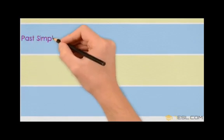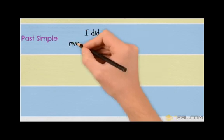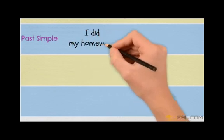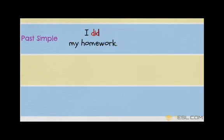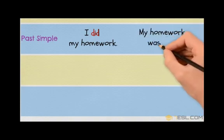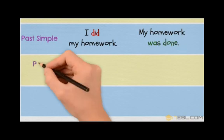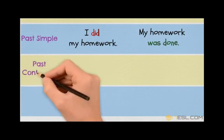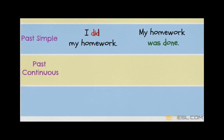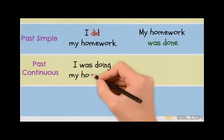In past simple tense, the active voice is 'I did my homework' — 'did' is the second form of verb 'do.' The passive will be 'My homework was done,' again using the past participle.